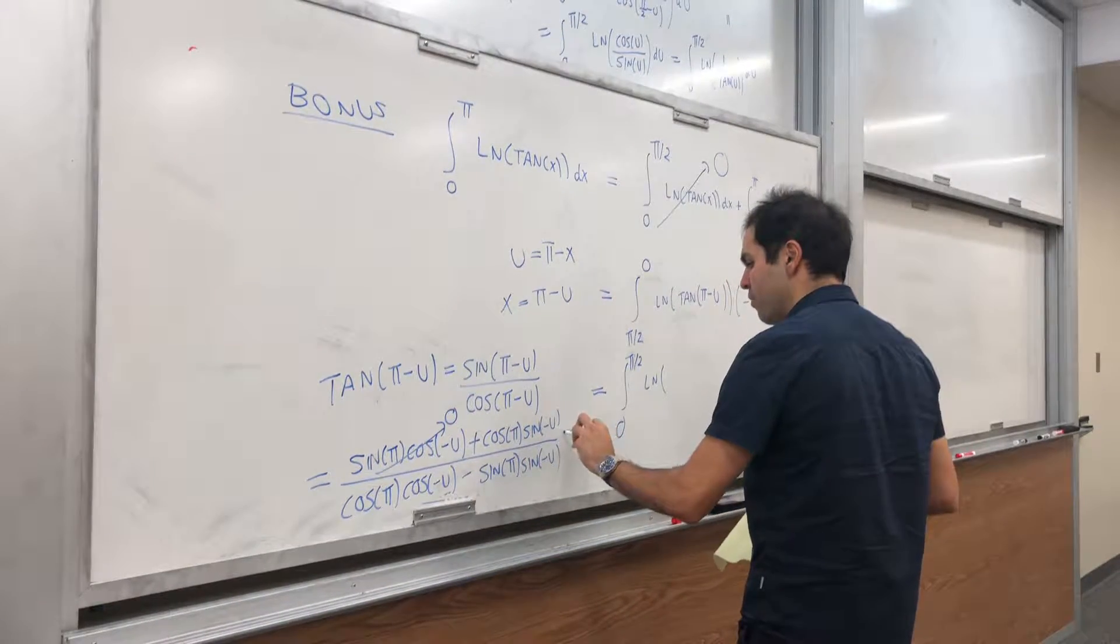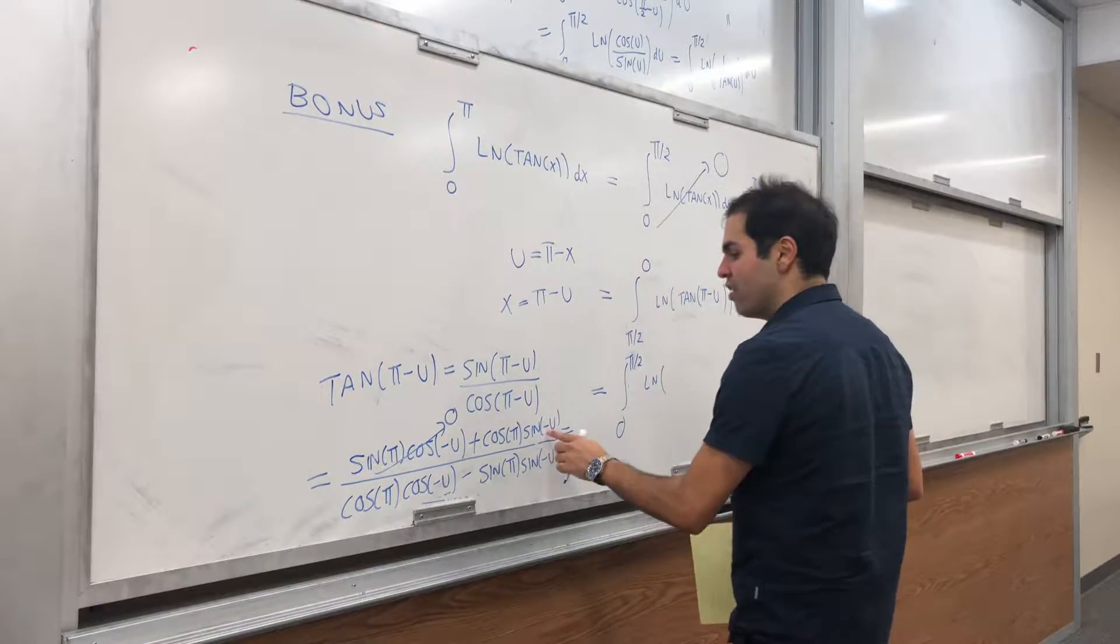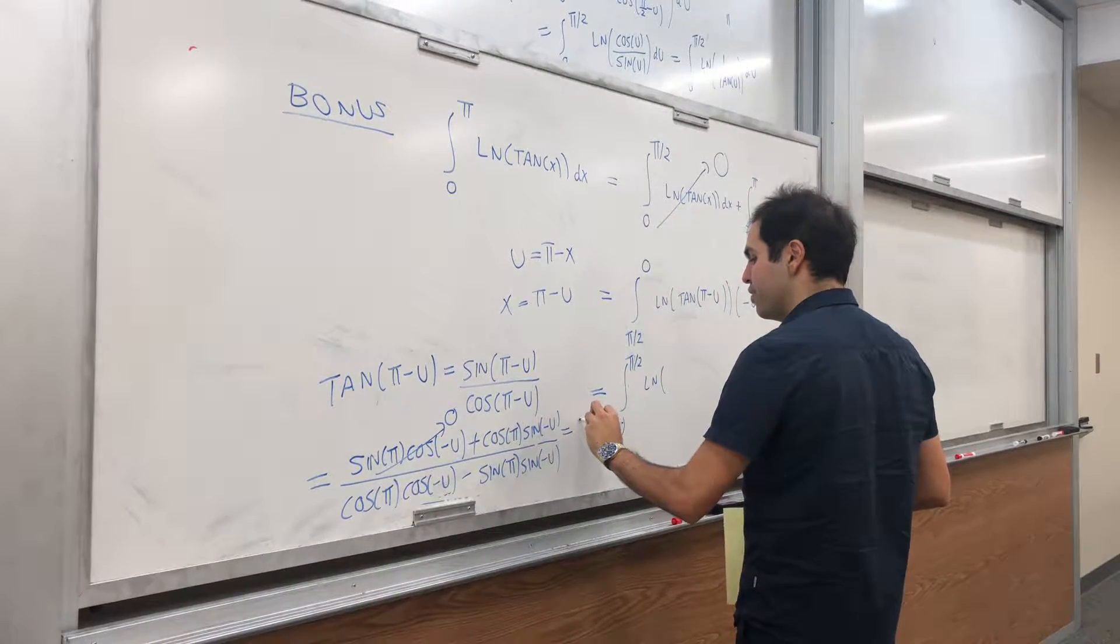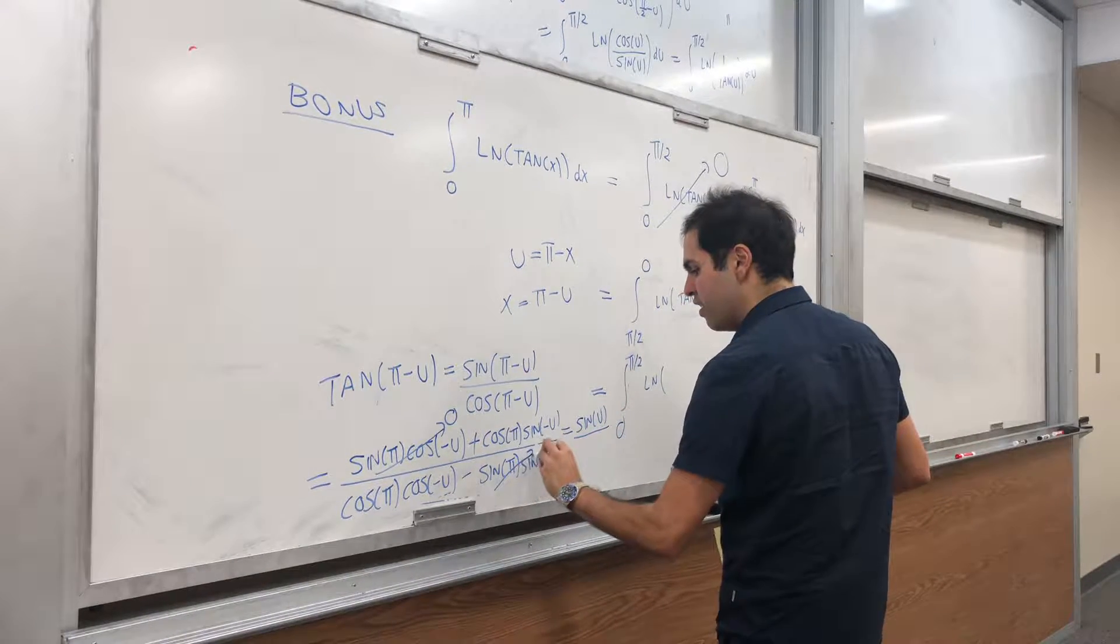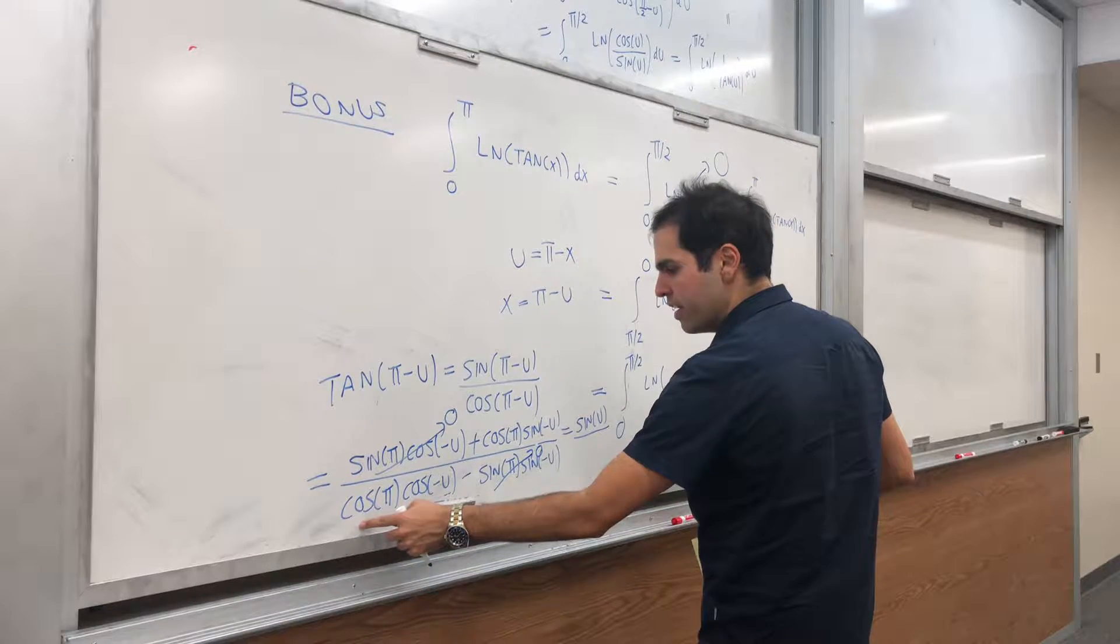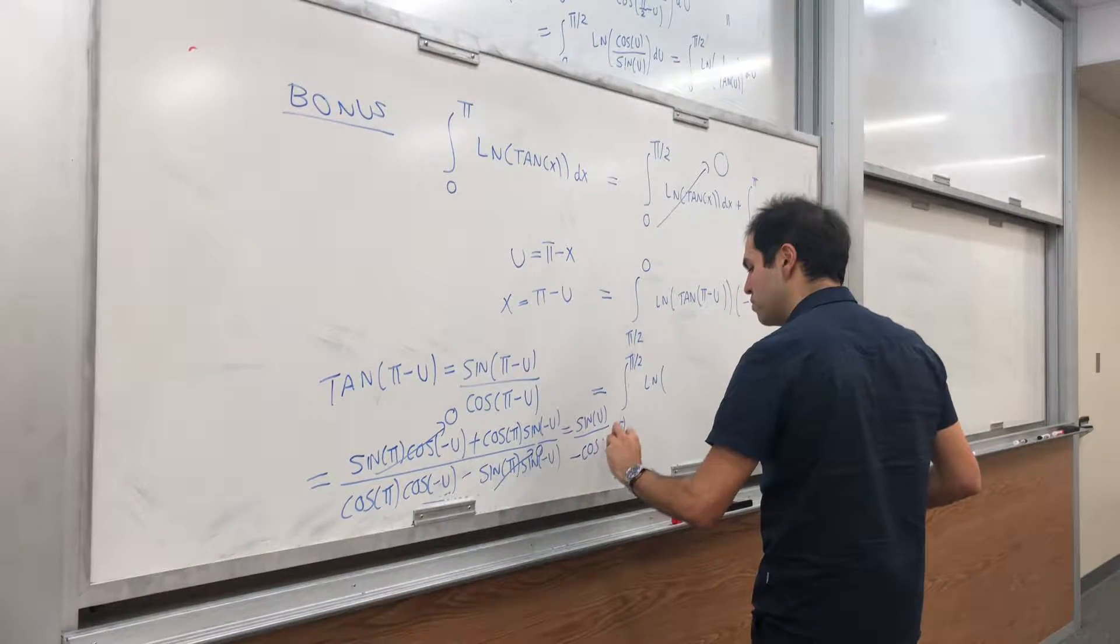And then we do get, so cosine of π is minus 1, sine of minus u is minus sine of u, so we get sine of u. And here, this sine of π disappears, and we get minus 1 cosine of minus u, so minus cosine of u.